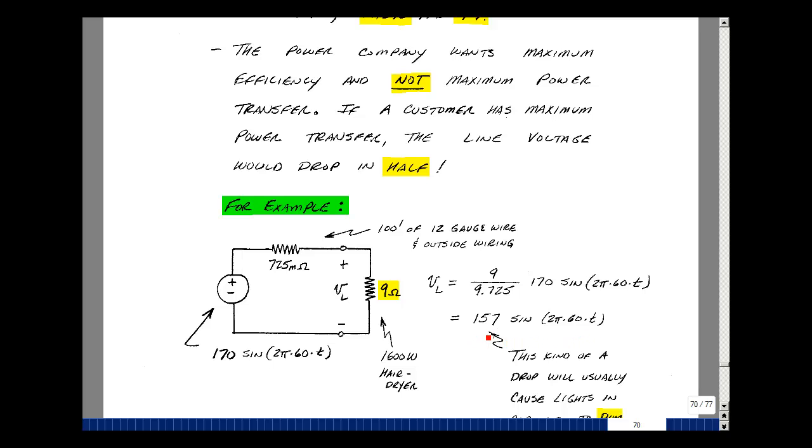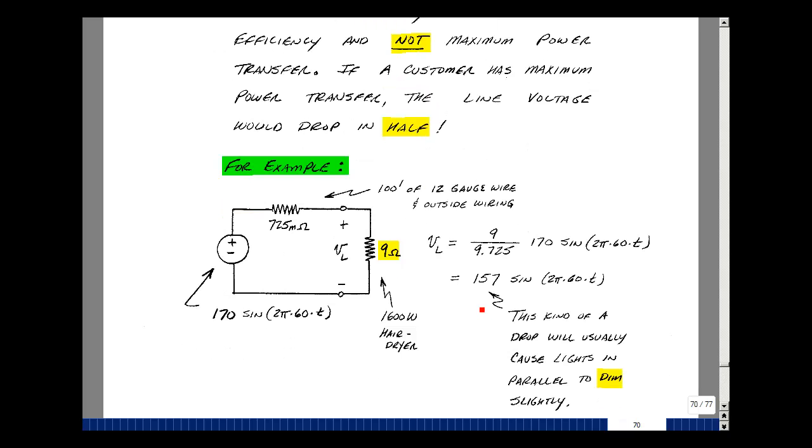The voltage drops from 170 volts peak to 157 volts peak. If the wall outlet where the hair dryer is plugged in is also tied to the lights in the room, you might notice that the lights dim when you turn the hair dryer on, because you're dropping the voltage from 170 volts peak to 157 volts.